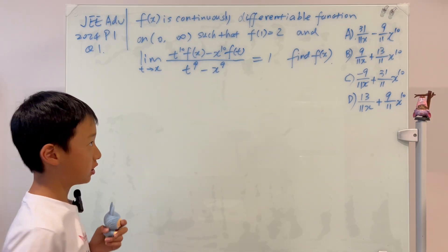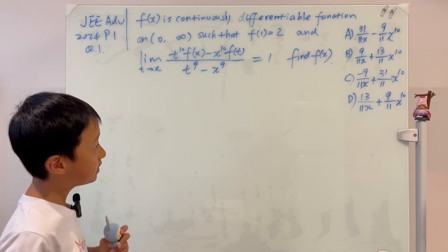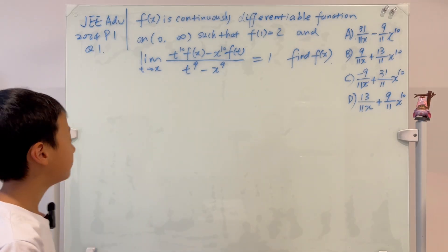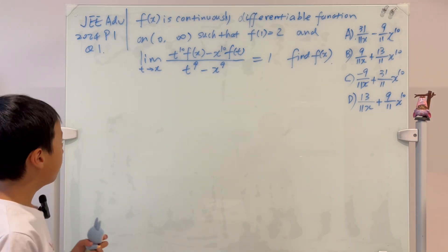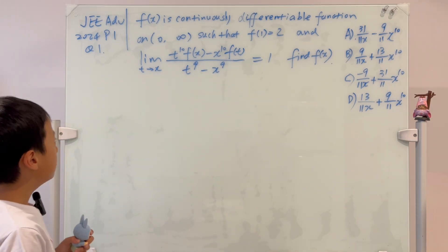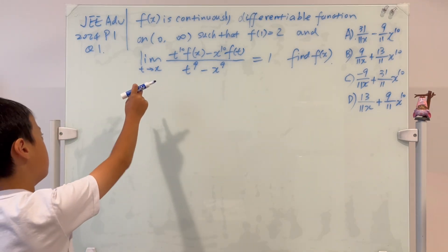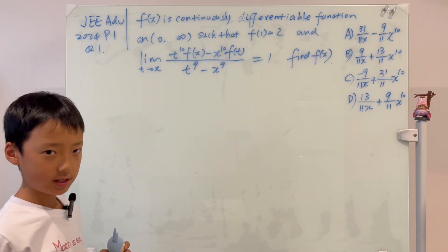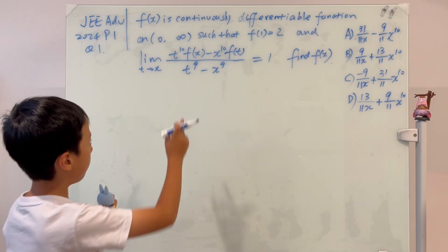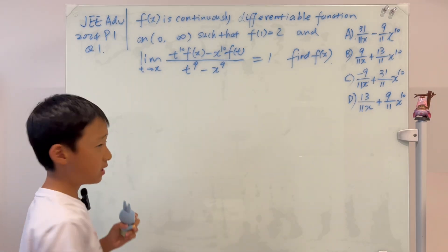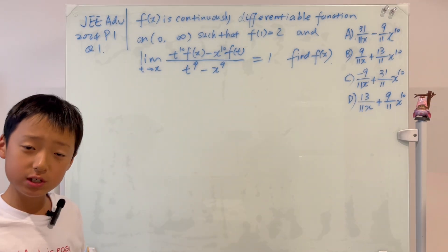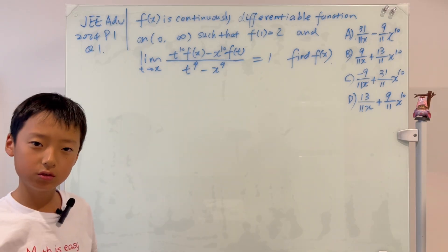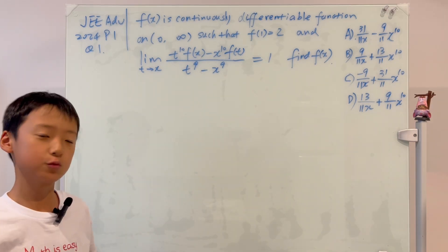The question asks us to find f(x) and we have to choose between a, b, c, and d. Why don't we just substitute t → x? We see it's a 0/0 case — so what does that make you think of? L'Hôpital's rule.